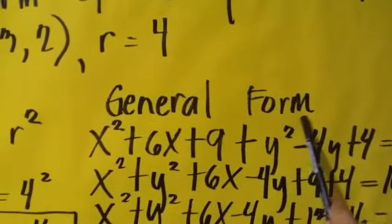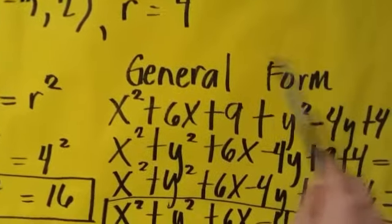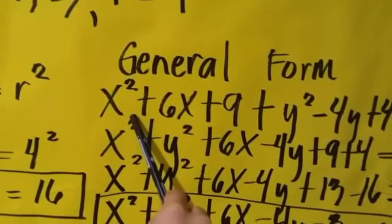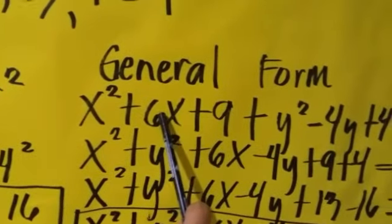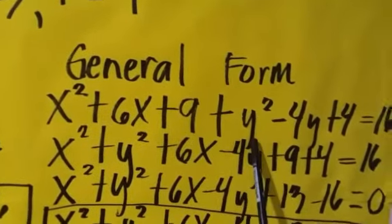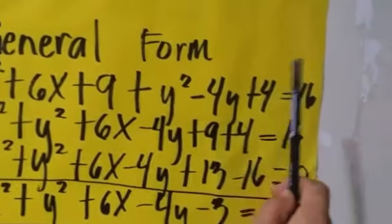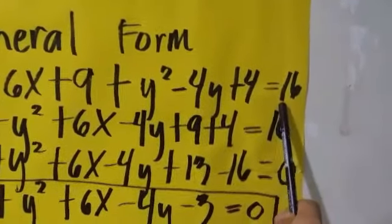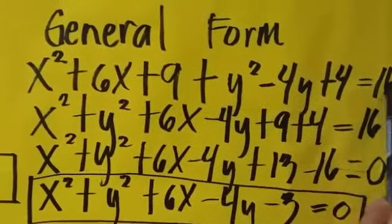And next, the general form. So we will expand it now. It will become x squared plus 6x plus 9 plus y squared minus 4y plus 4 equals 16.